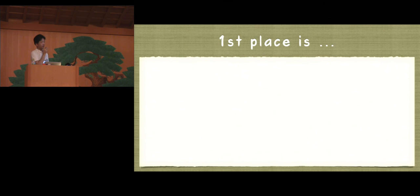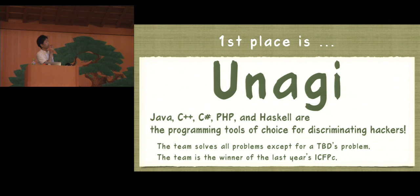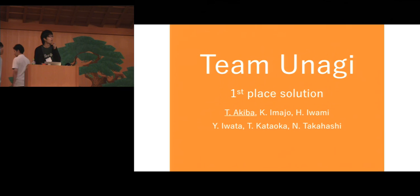Okay, come to this stage. So Java, C++, C Sharp, PHP, and Haskell are programming tools for choice of discerning hackers. And this Unagi solved all problems except for TBD's problem. That is excellent. And also this team's the winner of the last year ICFPC. Hi everyone, I'm Takuya Akiba from Team Unagi. So I'd like to briefly introduce our team and what we did during this competition.